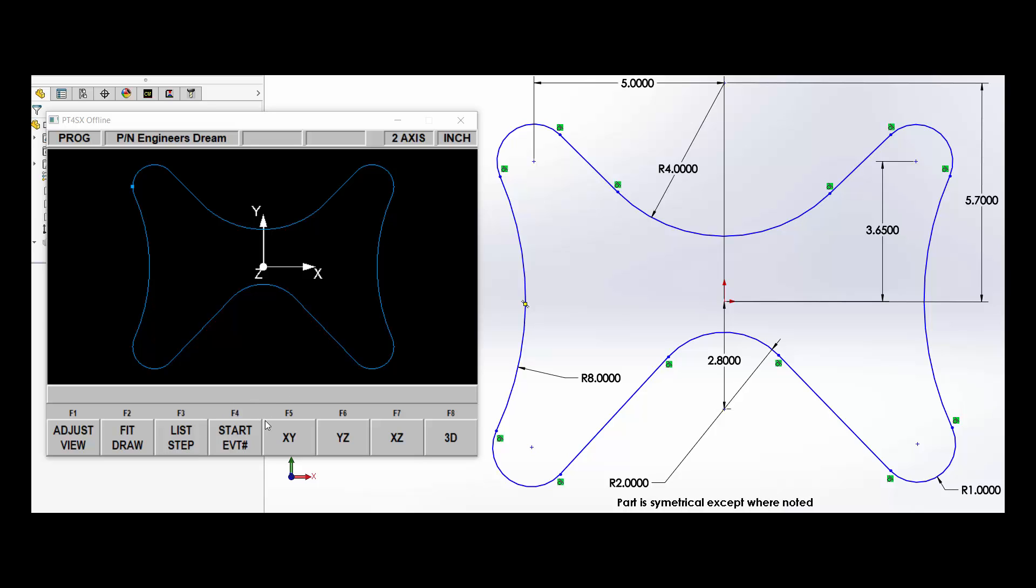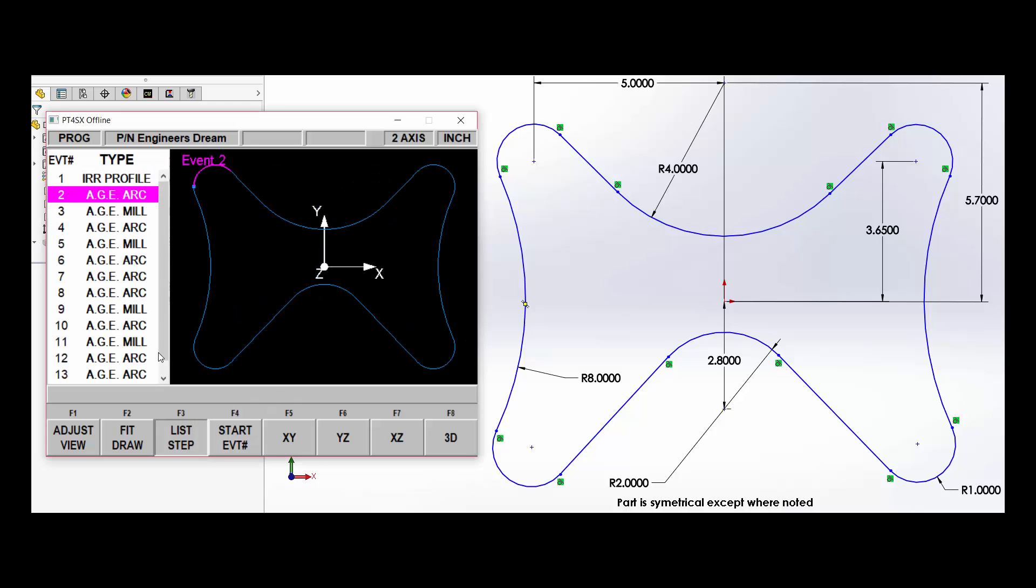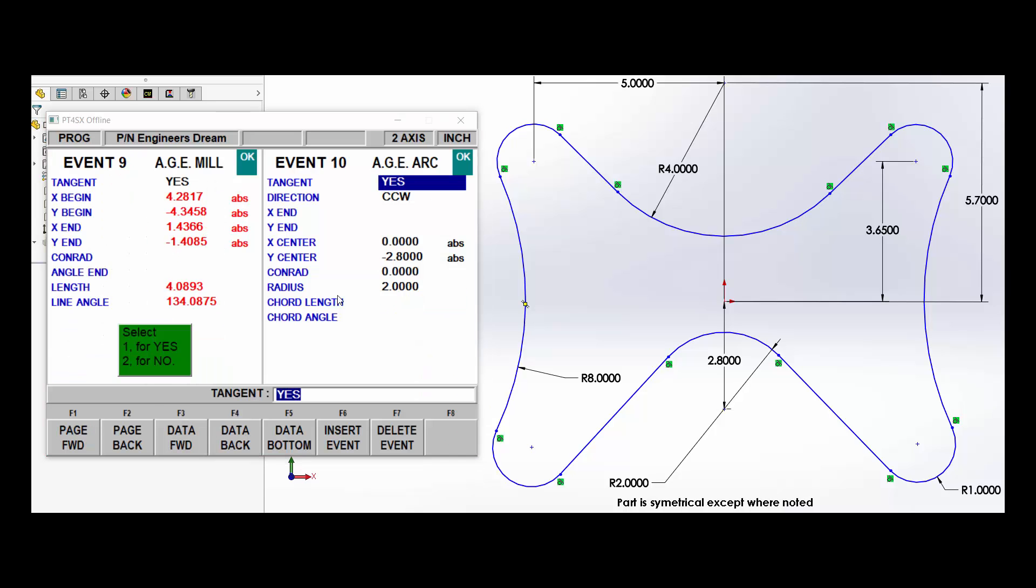And let's change the 2 inch radius too, let's make it a little bit smaller. So we step until we get to that feature we want to change, press your Look key, and come down and maybe make that 1.995. And it's done.